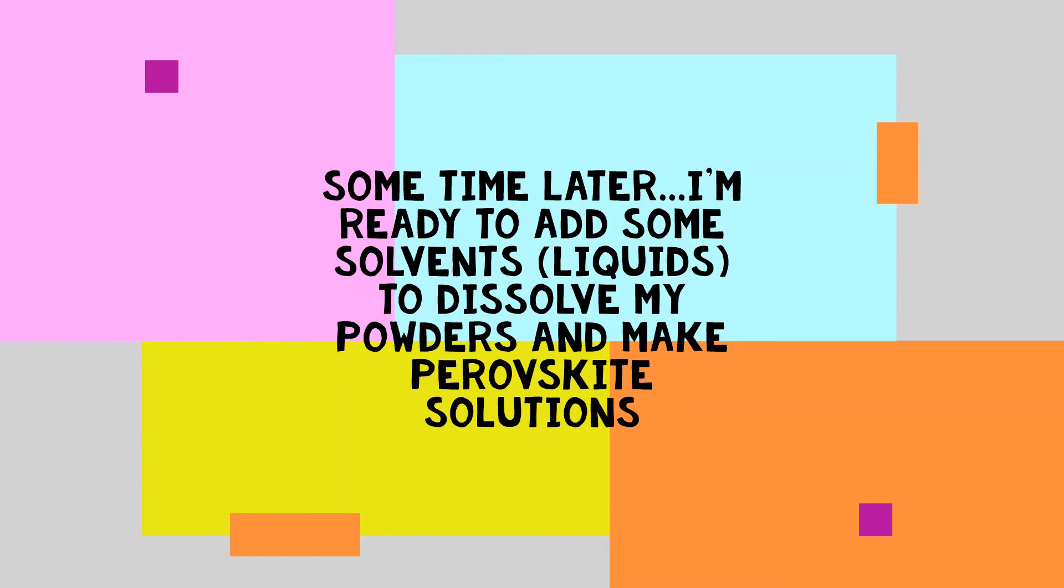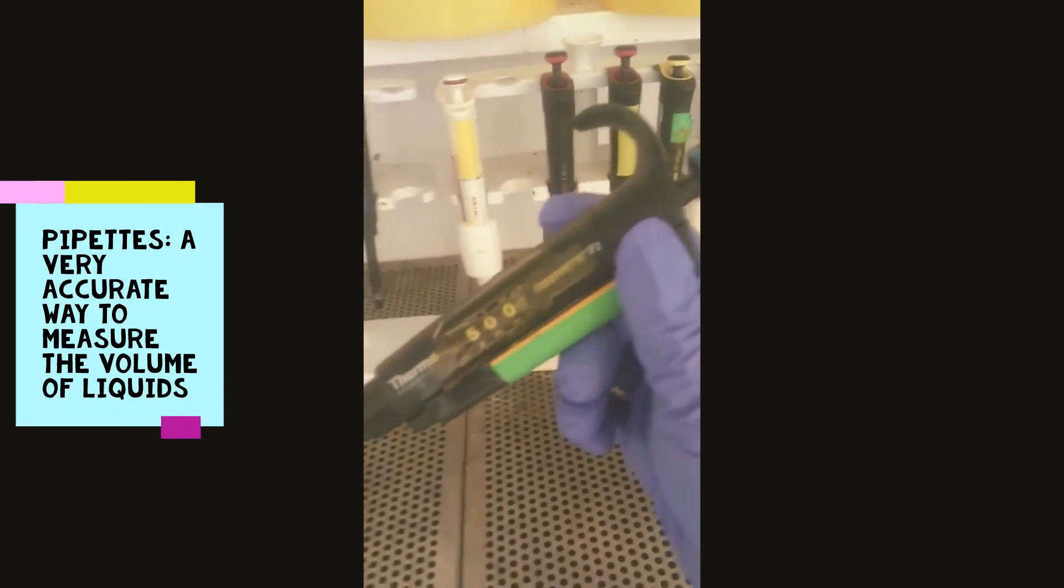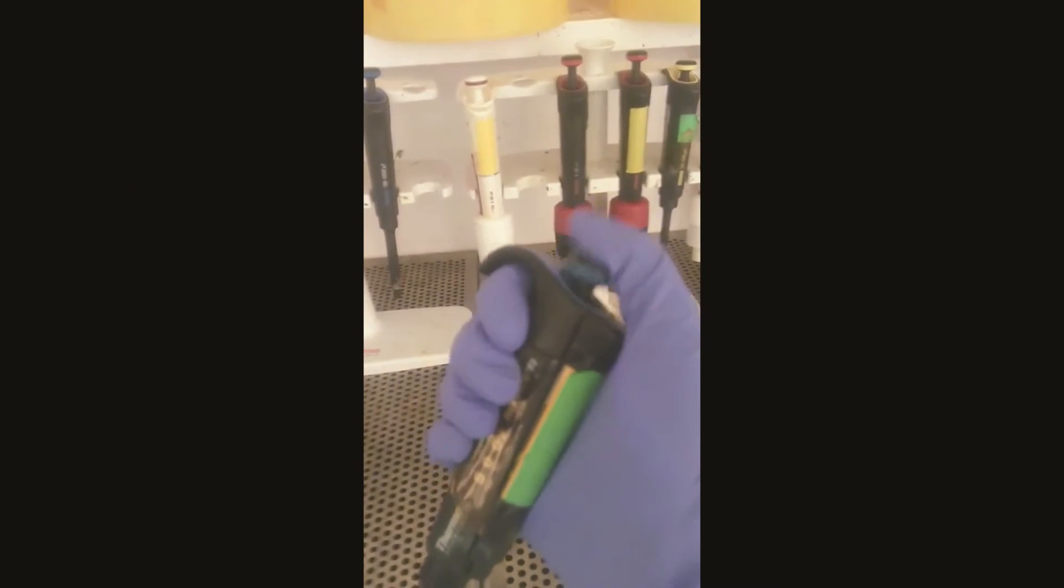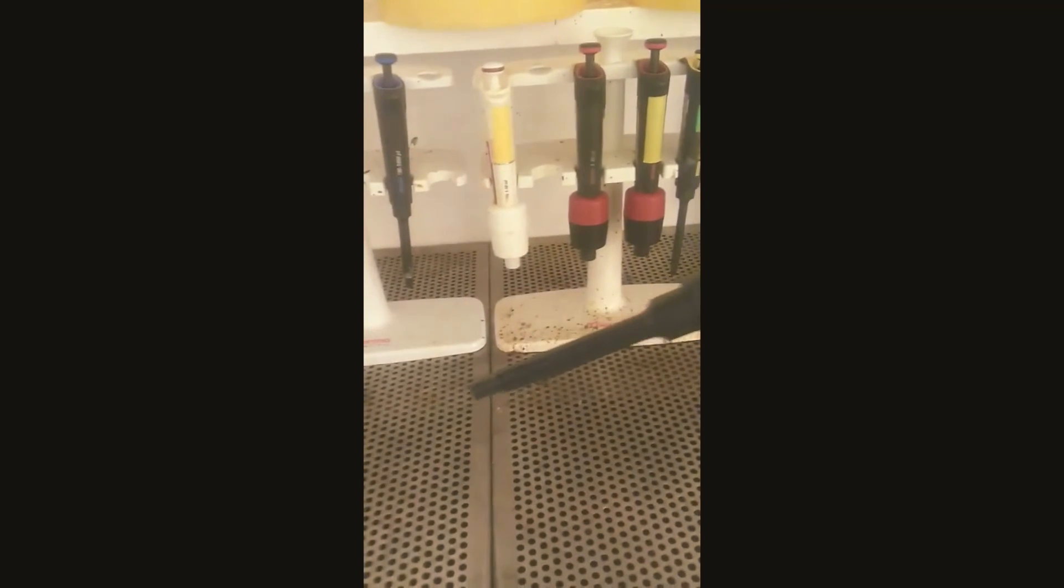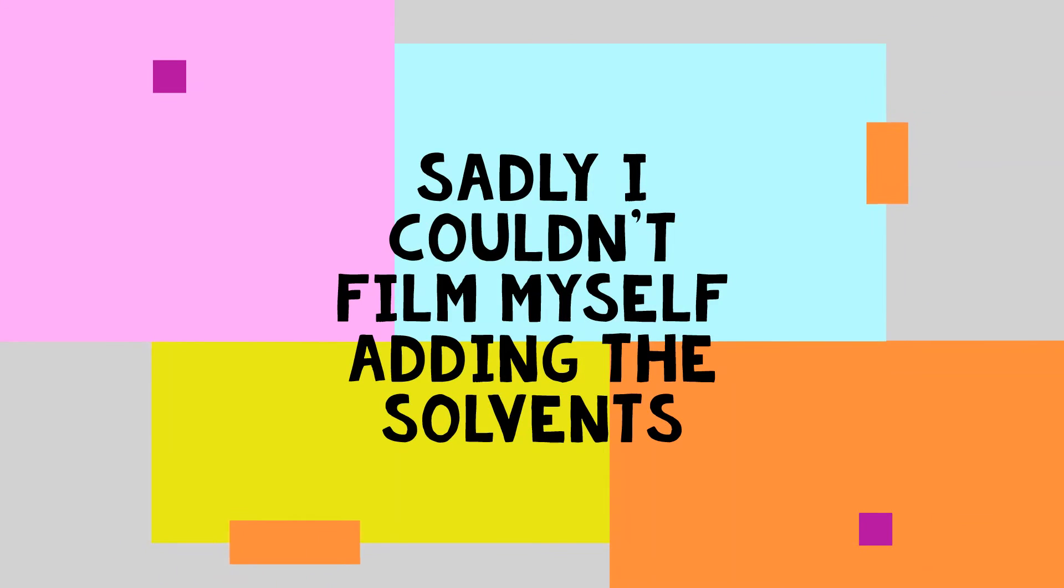Now I'm showing you what I'm going to use to weigh out my solvents. This is something called a pipette—you might have heard the word before, but these are like the next level. These are pipettes version 2.0. They're super accurate, super fancy, and pretty expensive. It's a very integral part of our experiments, using one of these, because we use them to make sure we have the exact right amount of our perovskite solutions.